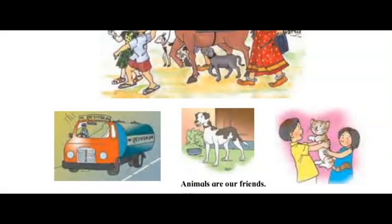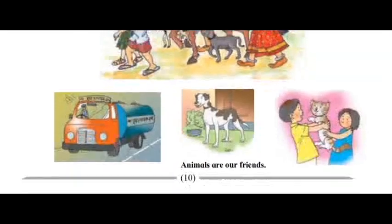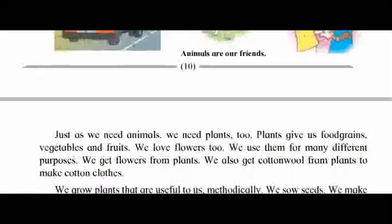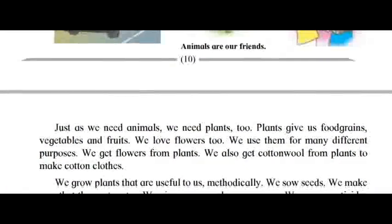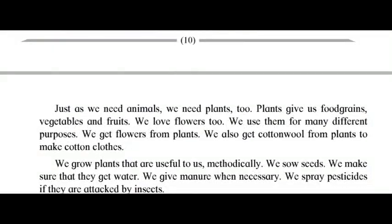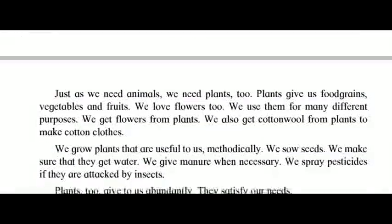Manure made from cattle dung and sheep pellets is good for plants. Farmers use it for growing crops. Animals are our friends. Just as we need animals, we need plants too.